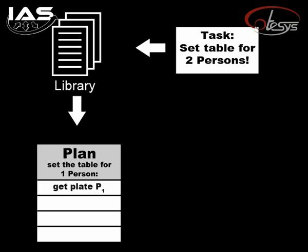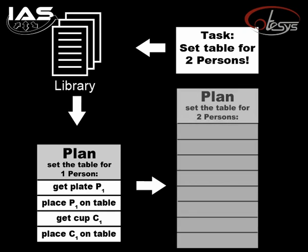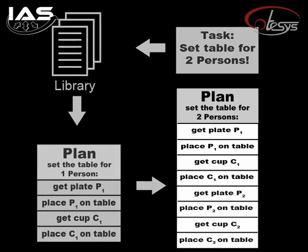Get plate P1. Place P1 on table. Get cup C1. Place C1 on table. The plan for the task which has to be executed can be generated by simply doing this twice: first plate 1 and cup 1, then plate 2 and cup 2.